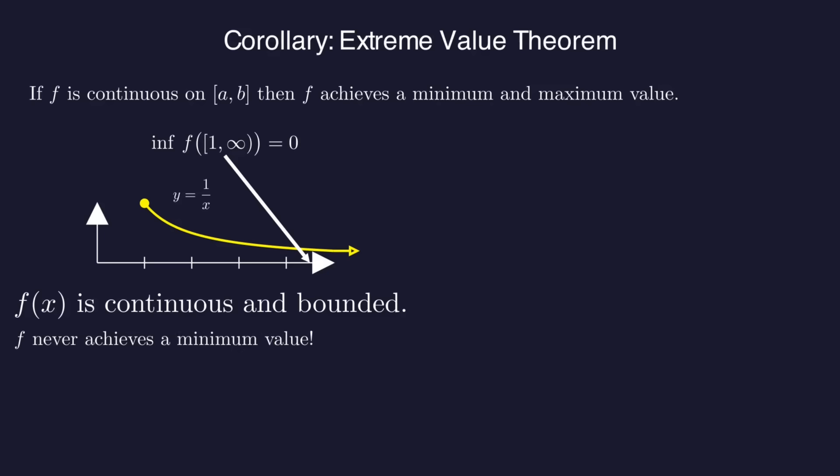It's bounded below by 0, and it gets arbitrarily close to 0, but it never achieves that value. We could also take the function arc tan of X on the entire real line. This is bounded above and below by plus and minus pi over 2.